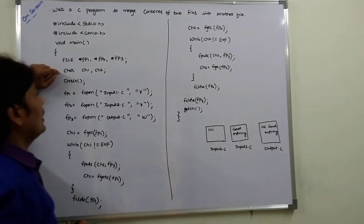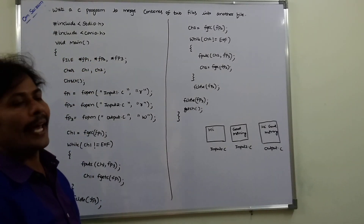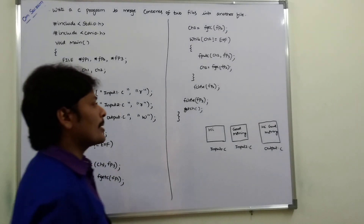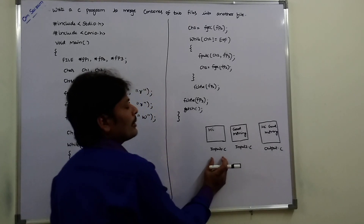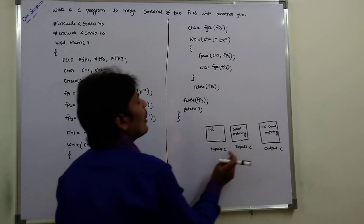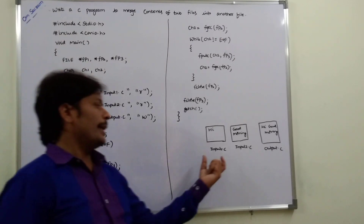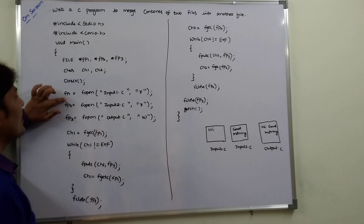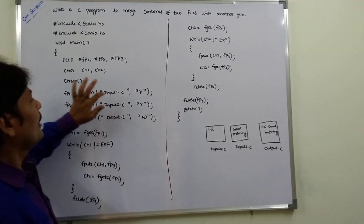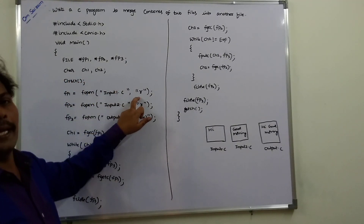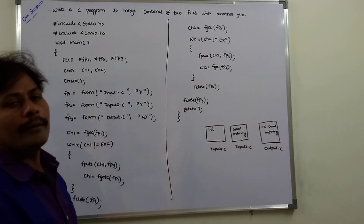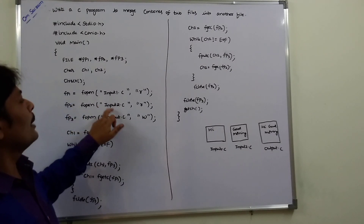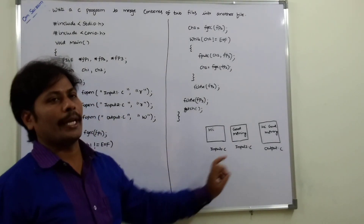These file pointers point to the data type called FILE — FILE must be written in capital letters. ch1 and ch2 are two character variables with data type char. First we have to read the information of input1.c and input2.c. These two files are opened in read mode: fp1 = fopen input1.c in R mode, fp2 = fopen input2.c in R mode.